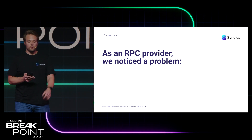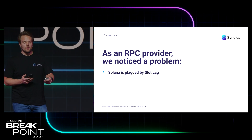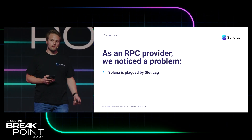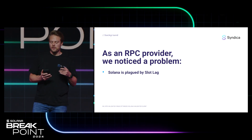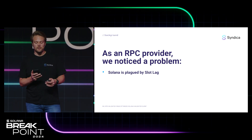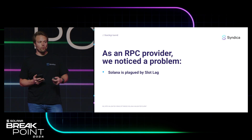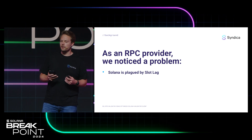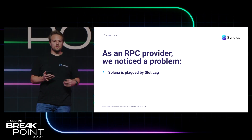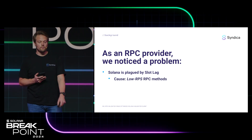As an RPC provider, we noticed a problem. Solana is plagued by slot lag, which means that essentially every RPC node is struggling to keep up with the latest data of the chain. This leads to poor user experience — users are not getting the latest data, and they're experiencing delays and errors when interacting with dApps. We realized this is caused by bottlenecks that accrue when a validator receives a large number of read requests over RPC for methods unable to process many reads per second, or RPS.